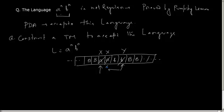Mark it as X, then go to the rightmost B and mark it as Y. Come back. If I hit any X or B, then I'll try to search for whether I have any extra B or not. If it is not there, then I can accept it.